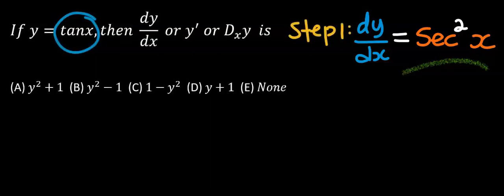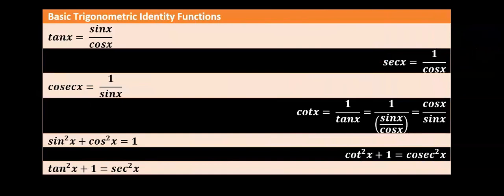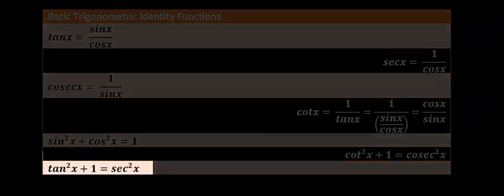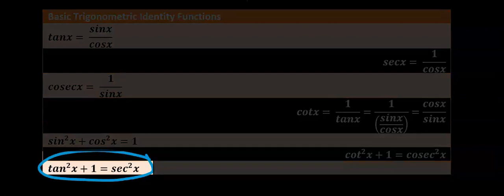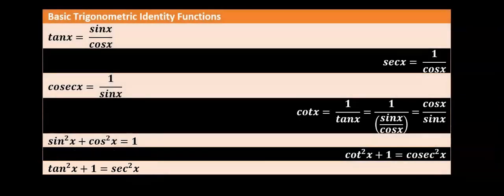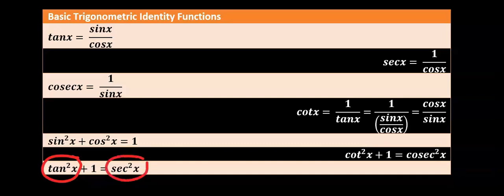You might probably want to choose none. However, from basic trigonometric identity functions, tan squared x plus 1 is equal to sec squared x. We are choosing this because the question got tan x in it and the derivative gave us sec squared x. I'm going to write tan squared x plus 1.